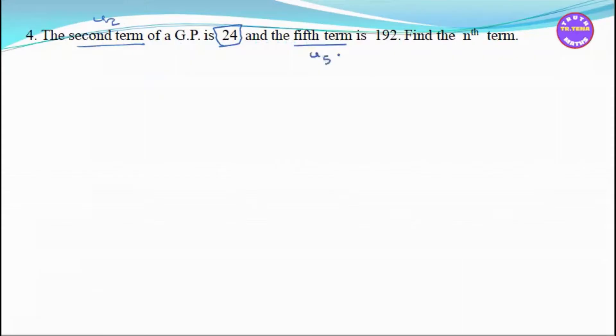Number 4: The second term U2 of a GP sequence is 24. The fifth term U5 is 192. Find the Nth term. The first term is to be determined.